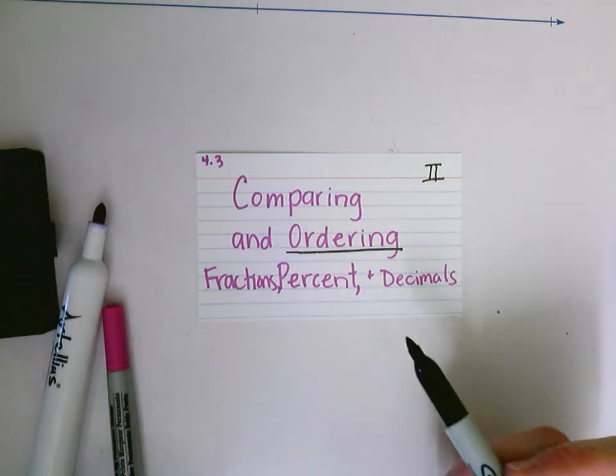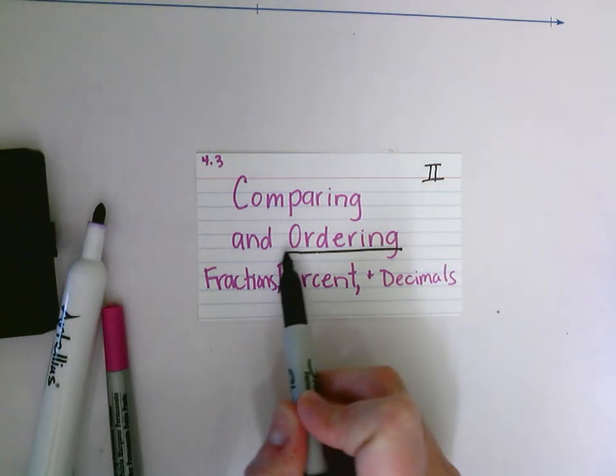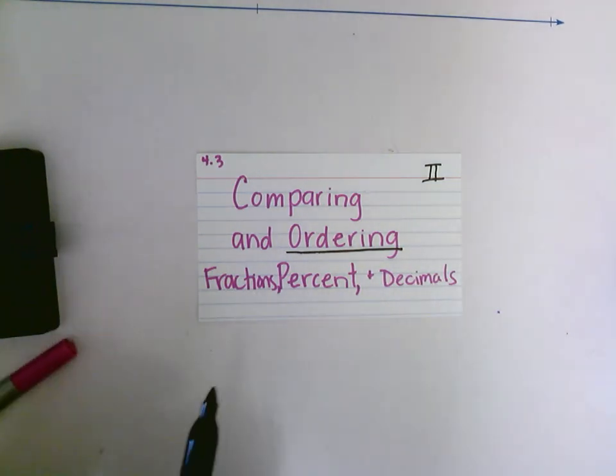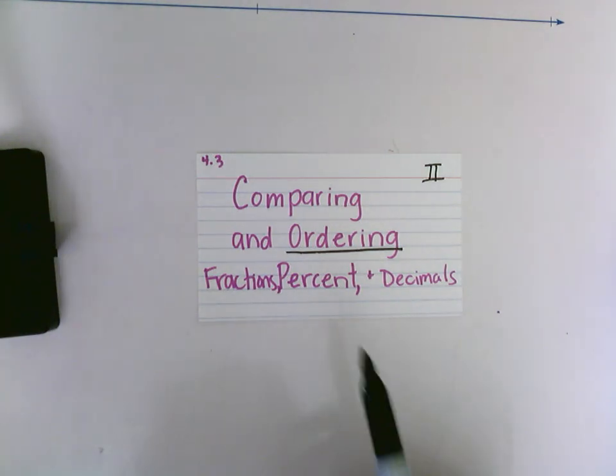In this video, we're going to be focusing on ordering fractions, percents, and decimals. So if I'm given a variety of fractions and percents and decimals, I want to put them in order from least to greatest or greatest to least.